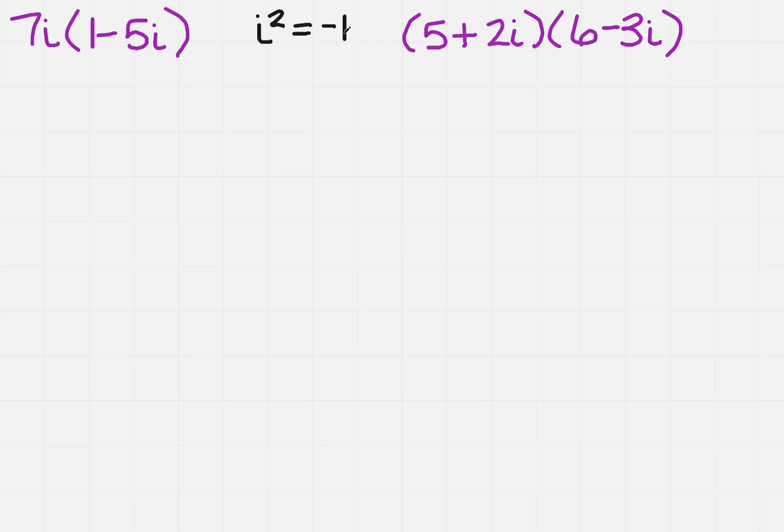So let's do an example so that we can see why we need to know that. The first one uses distributive property, so I'm going to get 7i times 1 is 7i. 7 times 5 is 35, and i times i is i squared.